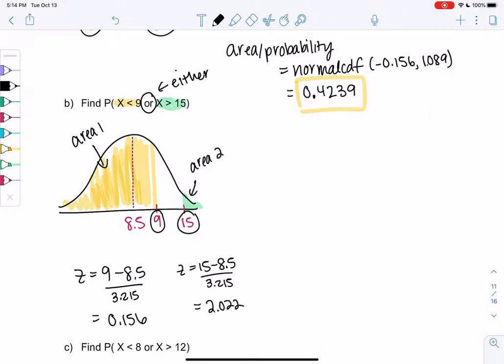So I'm going to find both areas and then I'll just add them together. So area 1 is yellow for me, the one on the left. And so we'll do normal CDF. The lower end point will be negative infinity because we just keep going. Negative 10 to the 99 comma 0.156.